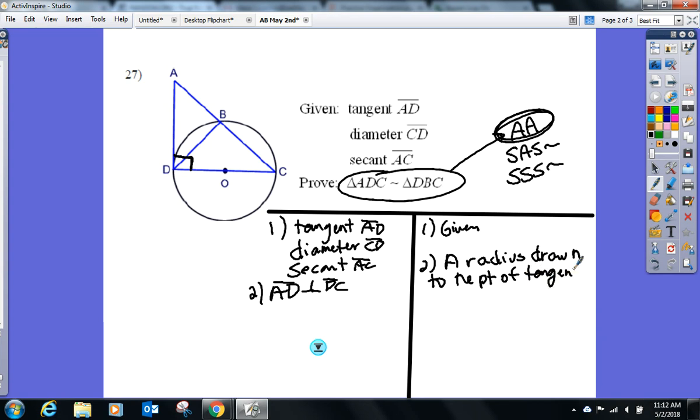I'm going to write AD perpendicular to DC. A radius drawn to the point of tangency, what about it? Is perpendicular to the tangent. Now we can say, what type of angle is created now? Angle ADC is a right angle. Perpendicular lines form right angles.